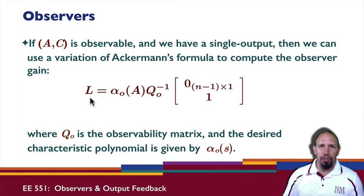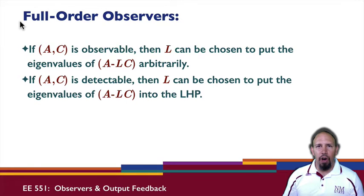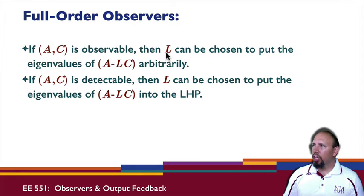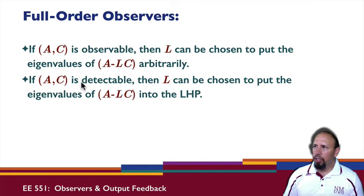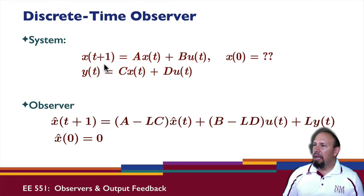So we can use the observer gain to put the eigenvalues of the observer where we want them. The type of observer we've been looking at is called a full order observer because it estimates all of the states - that's why it's called full order. To summarize these basic results: if (A, C) is observable, then L can be chosen to put the eigenvalues of (A - LC) wherever we want. If (A, C) is just detectable but not fully observable, then L can be chosen to put the eigenvalues of (A - LC) in the stability region - in the left half plane for continuous time, or inside the unit circle for discrete time.